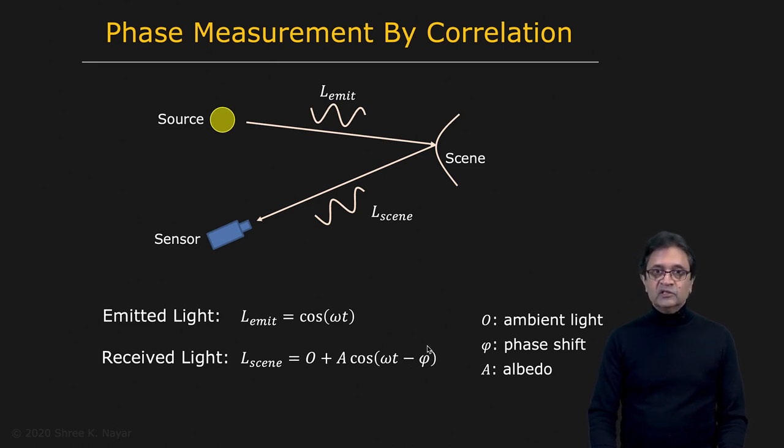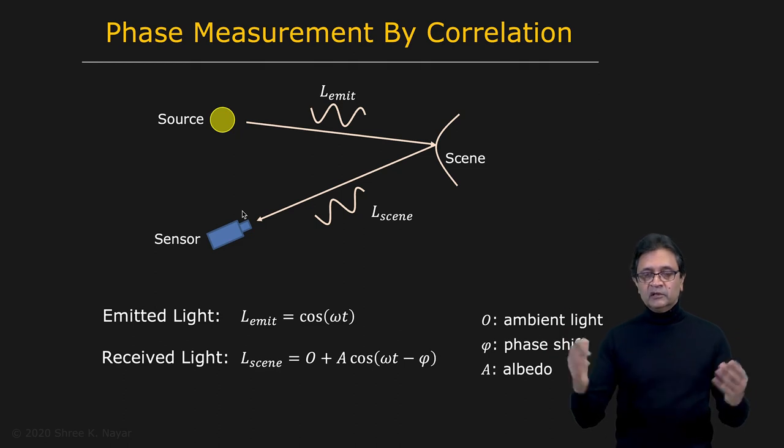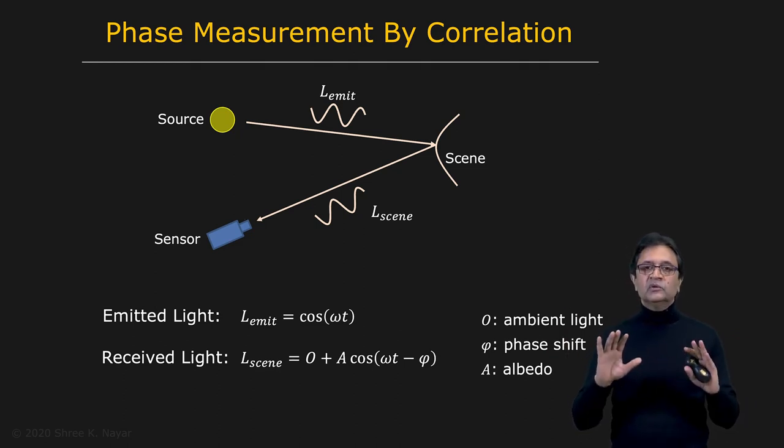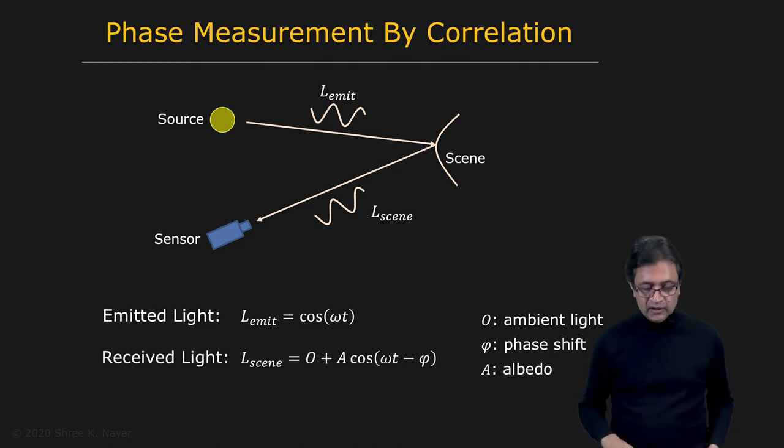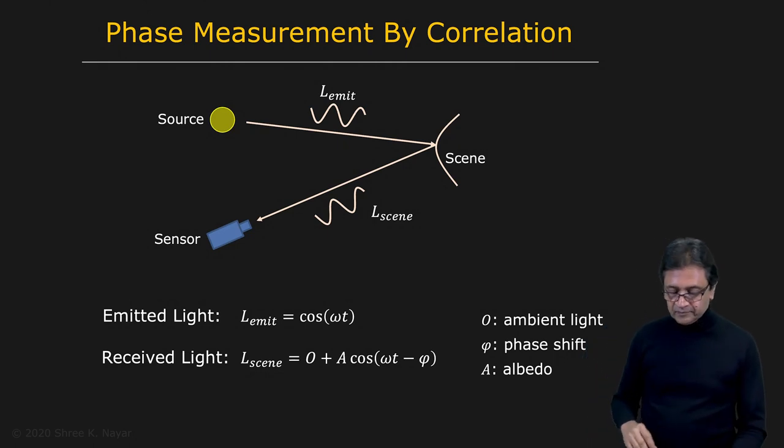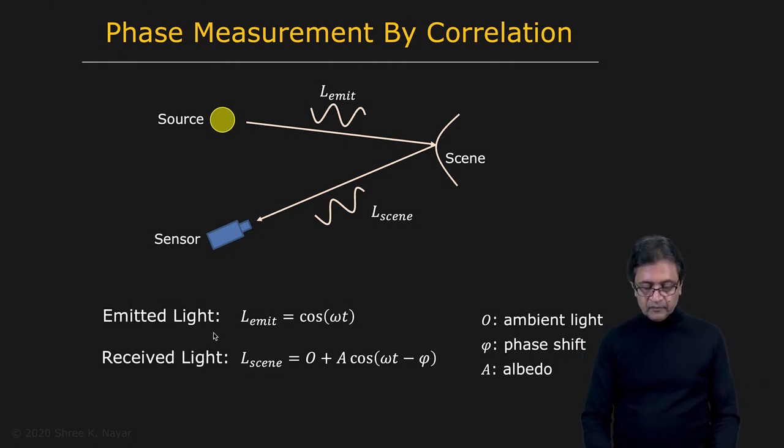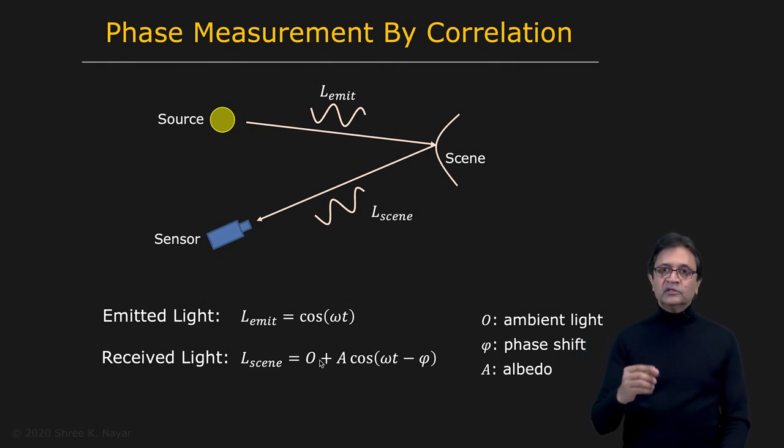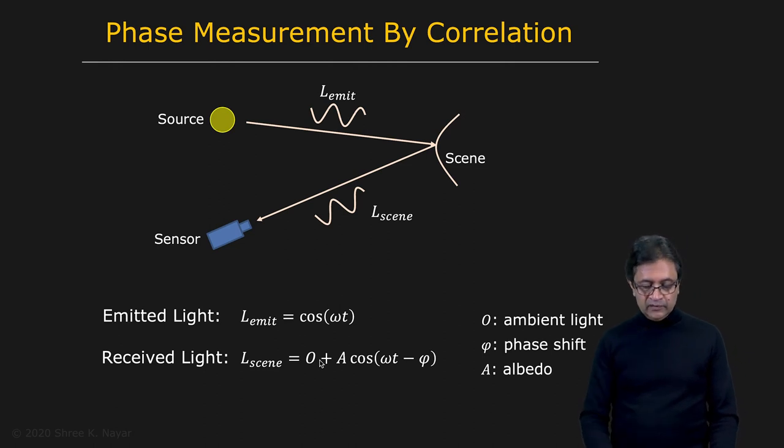Remember that if we measure ψ, we have all the information we need to compute depth. There's also some kind of ambient light that you measure, because the scene is not just illuminated by the source but maybe illuminated by other sources. We'll assume that to be constant and not modulated or changing over time. That's O.